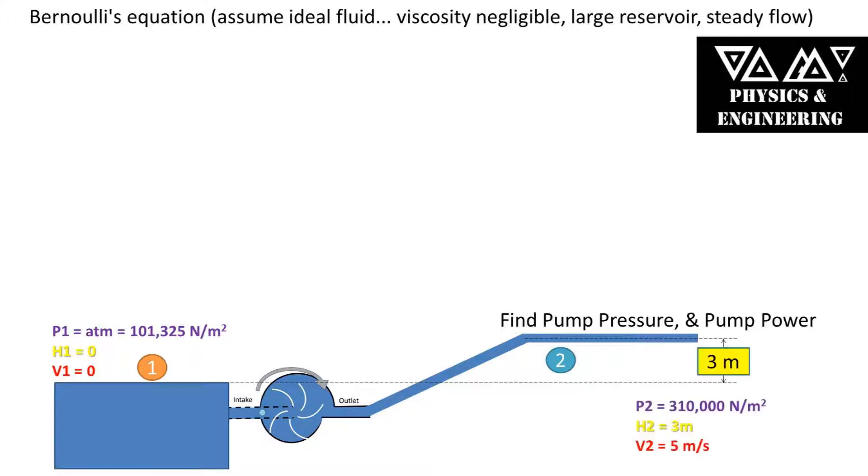This pump is pumping water to a height that is three meters higher than the waterline on the reservoir. We will be referring to this point as point two which is inside of a pipe. The pressure at point two is 310 kilopascals and has a velocity of five meters per second. We will be dealing with absolute pressure meaning that atmospheric pressure is already added to it.